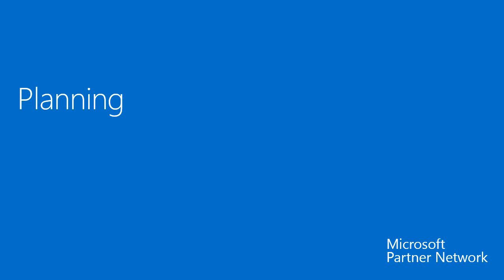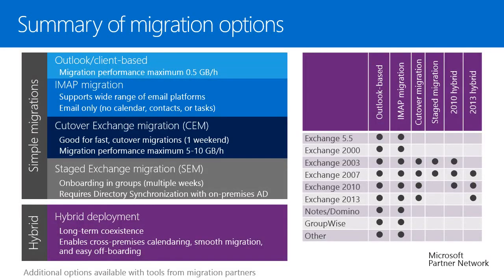Let me start with the planning process in general and show you the big picture first. This is a great overview slide about the migration options available. The very first is called the Outlook or client-based migration. This migration type is based on the client side and has pretty limited performance — a maximum of half a gigabyte per hour. With a slower internet line with slower upload bandwidth, you may see decreased performance while uploading emails.